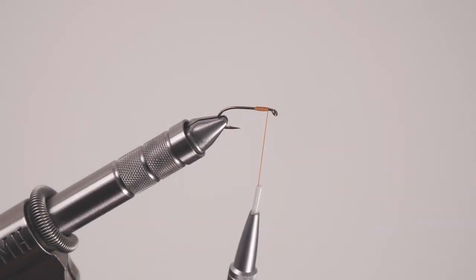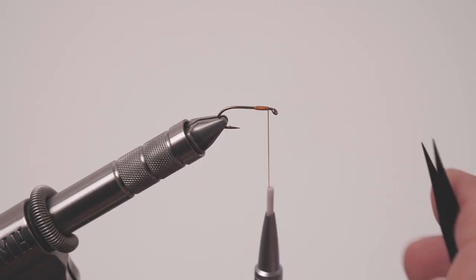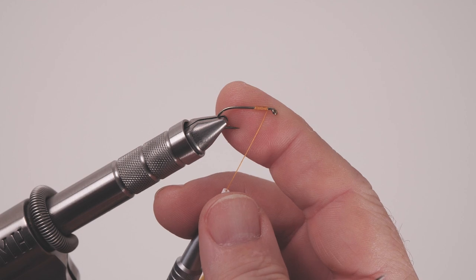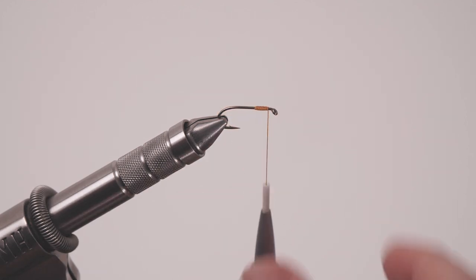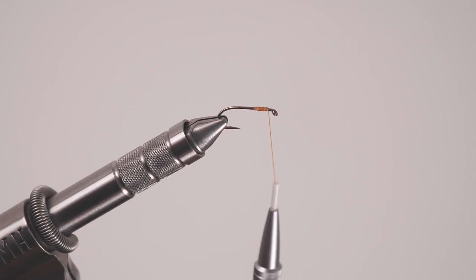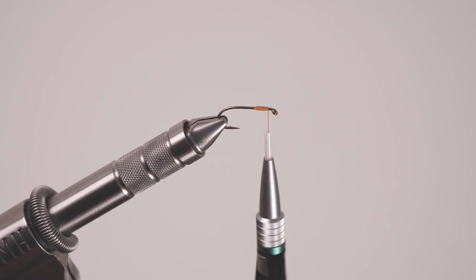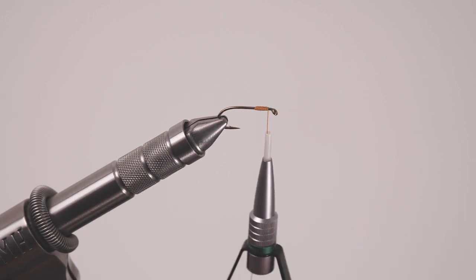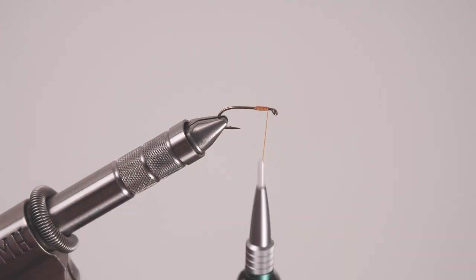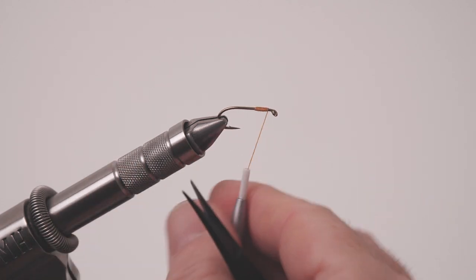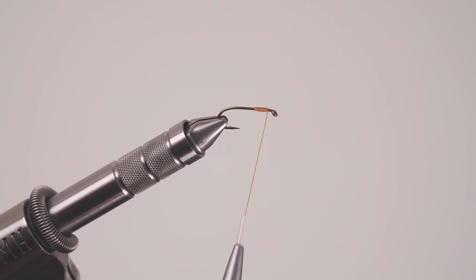I've gone ahead and lashed the thickest thread I have available for demonstration purposes to the hook. So imagine we've just tied our fly, we've reached the point where we're getting ready to do a whip finish at the head of the fly. The first thing to do is to uncord our thread. So what do I mean by that? If there's twist in the thread, bring your bobbin up, let it sit. You can see it's spinning in a clockwise direction. So it's trying to unfurl.